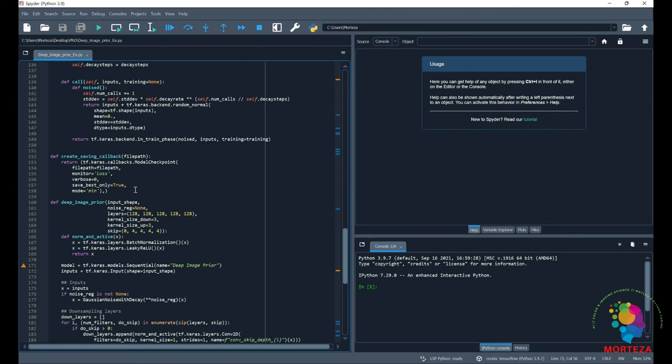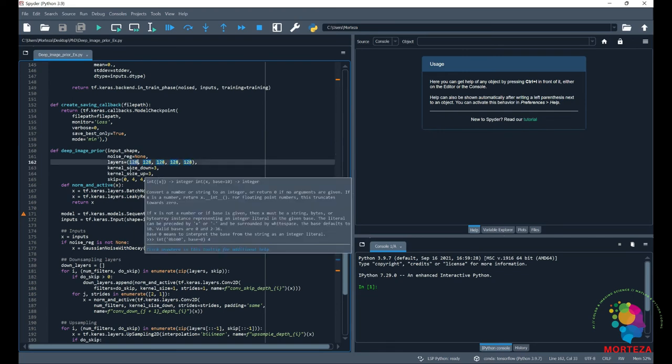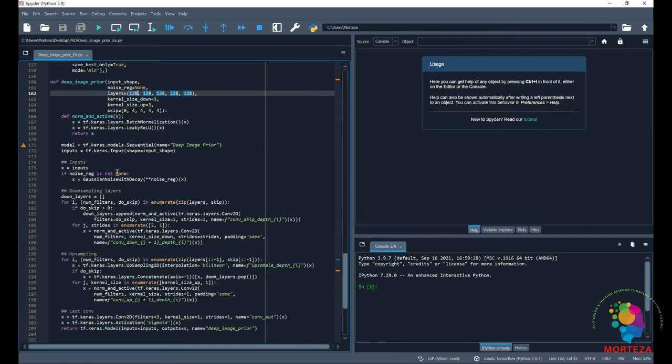This is where the best output is saved. And this is where the architecture of the network is put together. 128 is the number of filters in each layer. The size of kernels are 3.